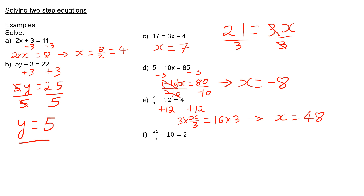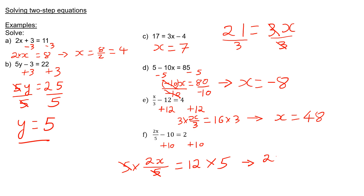In question F, I first need to add 10 to both sides, which will give me 2x over 5 is equal to 12. I then multiply both sides by 5 to get rid of the 5 on the bottom of the fraction on the left-hand side. This leaves me with 2x is equal to 60. I then divide both sides by 2, which leaves me with x equals 30.